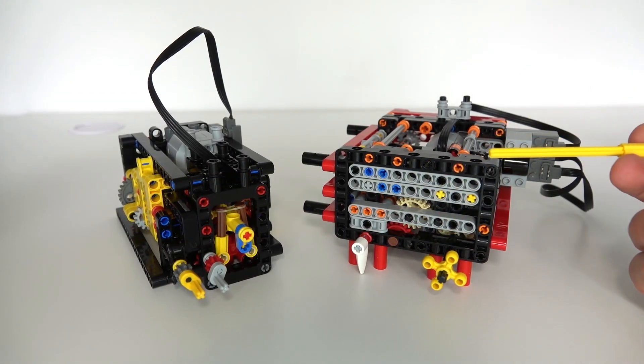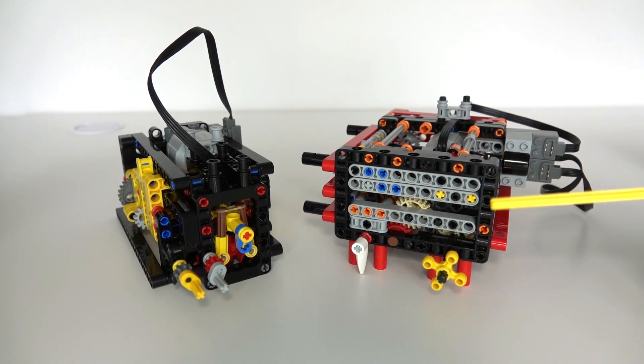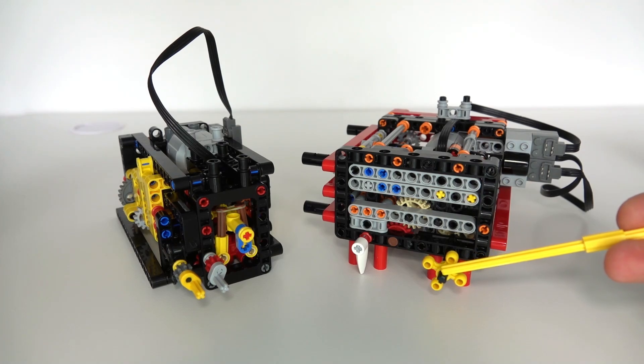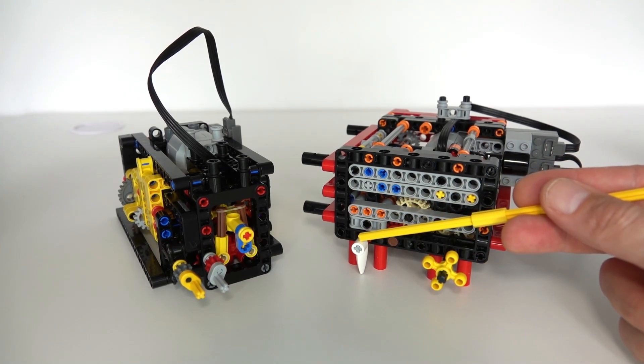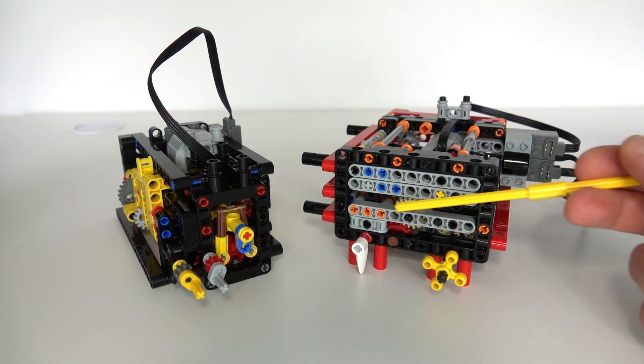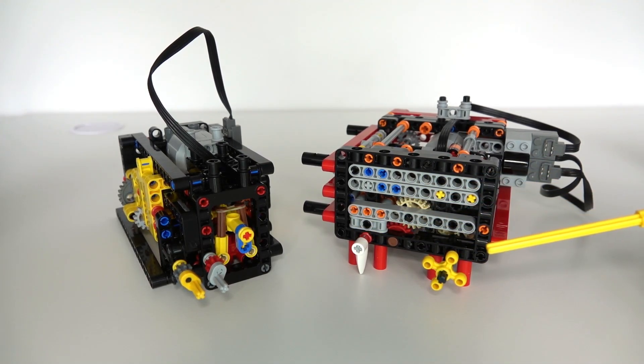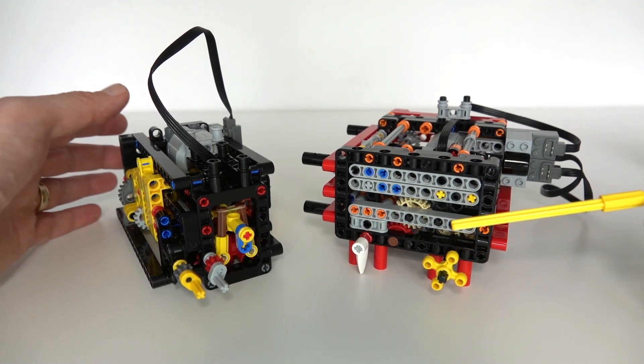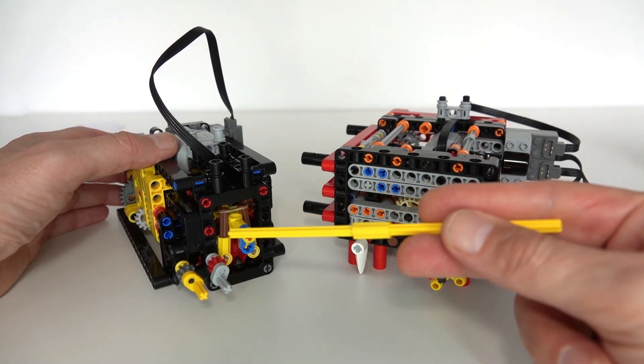The multi-function gearbox I presented a couple of weeks ago is the one on the right here. It implemented two different functions, one being just rotating the output, and the other being changing the gears of that output. This has four different speeds, three forward speeds—slow, medium, and fast—and one reverse speed.